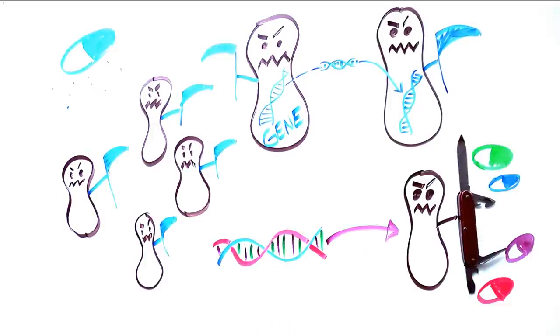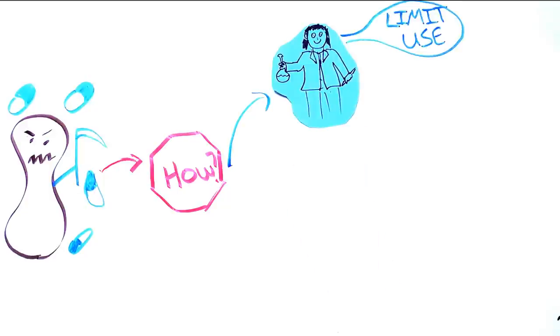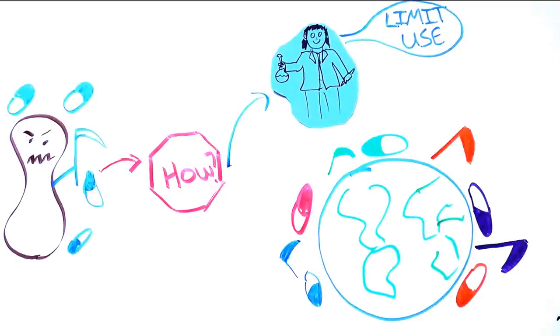Understanding that the more bacteria are exposed to antibiotics, the faster they develop resistance, helped scientists recommend limiting the use of antibiotics when possible to prevent this. However, antibiotics are still widely used with very little oversight, and today antibiotic resistance is everywhere.